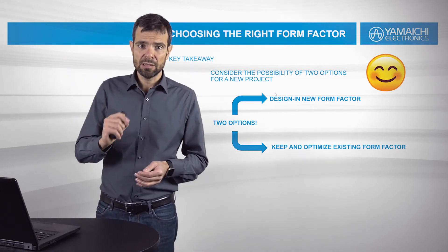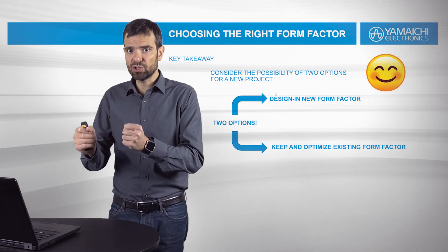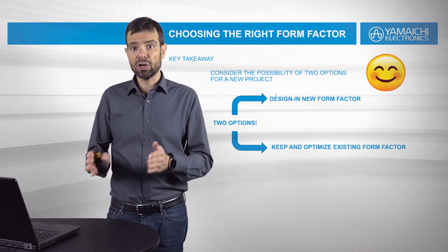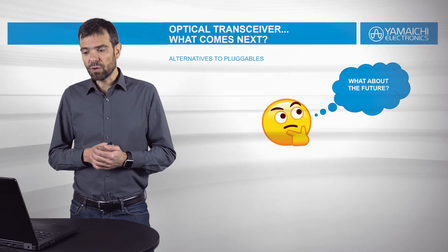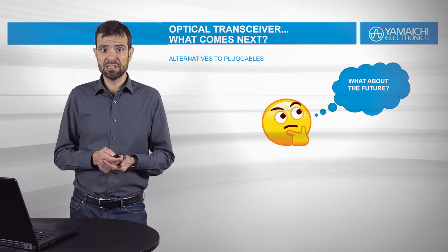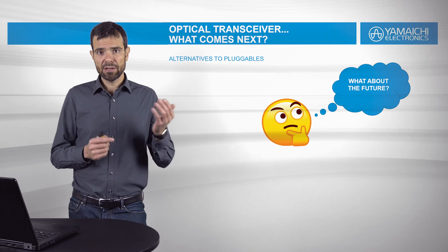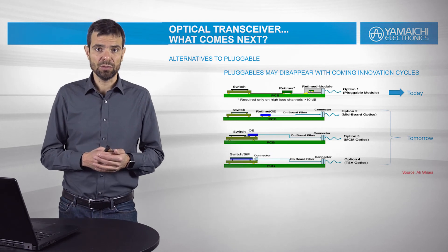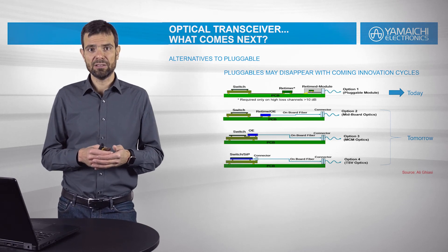The key takeaway is that you have two options: when you have a new project, you can design in a new form factor, or you can keep the old form factor and optimize it. Now, what about alternatives to pluggables? The future may bring approaches that will replace or partially replace pluggables. Here we can see different scenarios — the top scenario is the current one, where we use a cage, a connector, and a pluggable that is plugged into that connector.